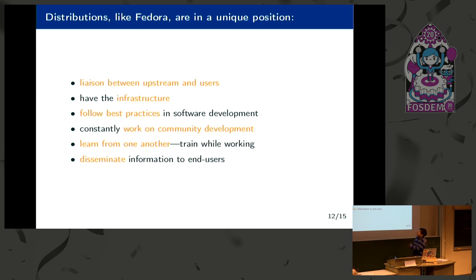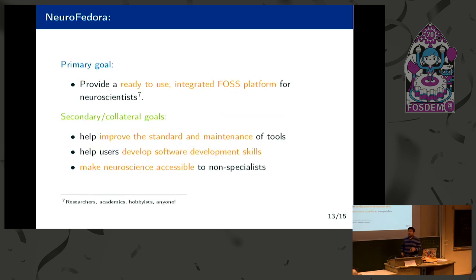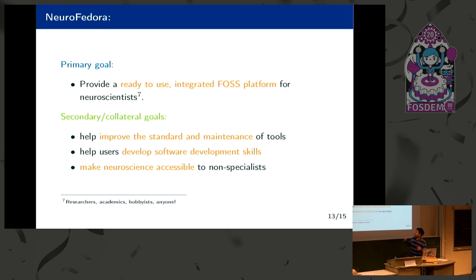We constantly work on community development, learn from one another, and always provide help to users. NeuroFedora is a group of people aiming to package neuroscience tools and software for the Fedora operating system. Our primary goal is to provide a ready-to-use integrated open science platform for neuroscientists. We aim to create a spin or lab image of Fedora to provide to users, and we have already created one.